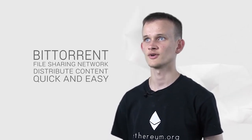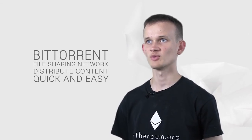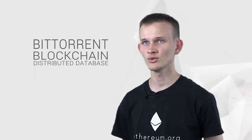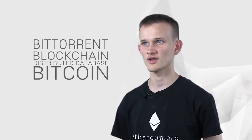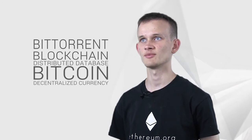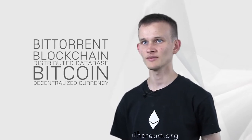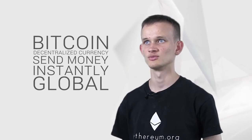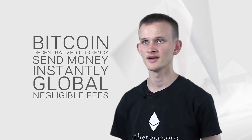Five years later, Satoshi Nakamoto came up with the idea of a blockchain, a sort of distributed database, and used it to build Bitcoin, the world's first decentralized currency. Decentralized currencies like Bitcoin allow people to send money instantly anywhere around the world with no regard for national borders, with negligible fees.